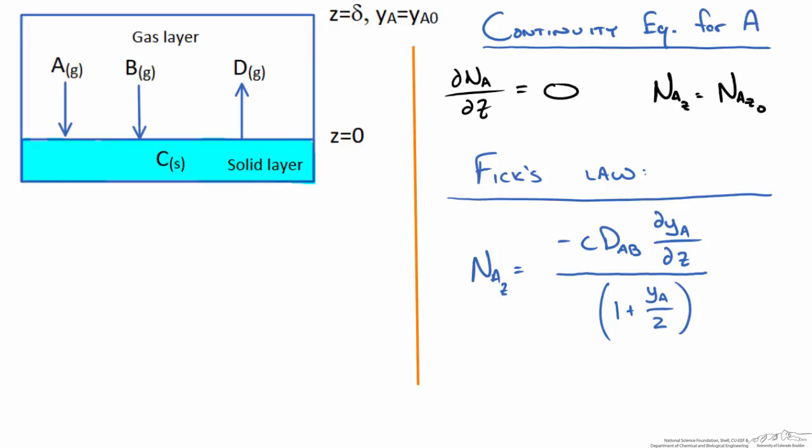Now we know that from Fick's law the flux in z must be equal to NAz naught at every position of z. So we can set this equal to negative c DAB dy/dz over (1 + yA/2).